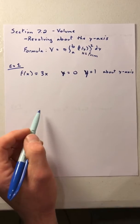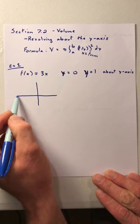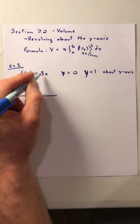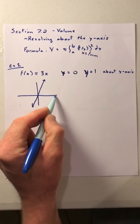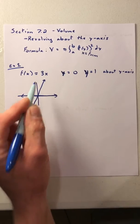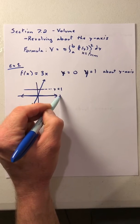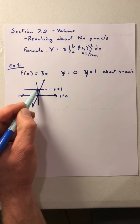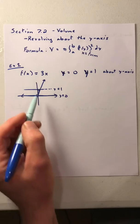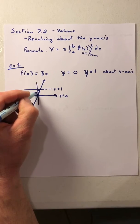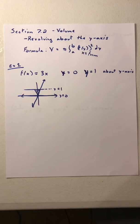Let's look at example one. If I have f(x) = 3x, we can set up this figure to see what it looks like — it's going to look something like this. We have y = 0, which is the x-axis, and y = 1. The figure we're creating is in that region. If we revolve this about the y-axis, we're going to create a cone, and we're finding the volume of that cone.